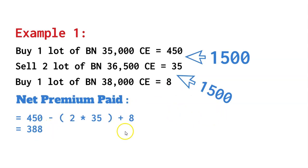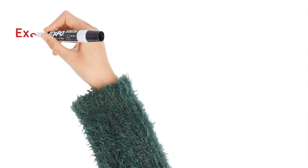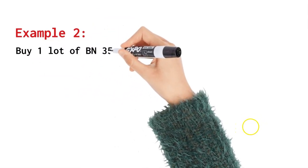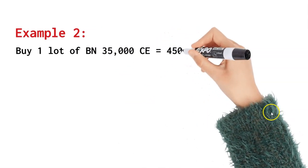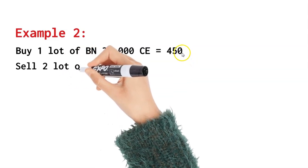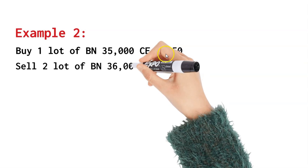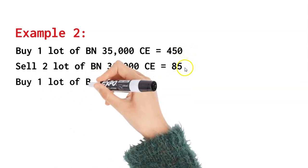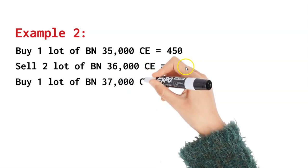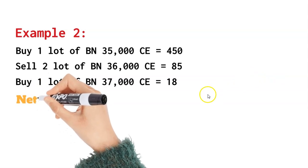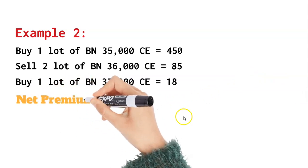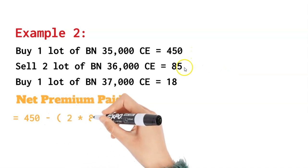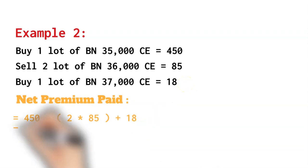In the next example the cost is reduced from 450 to just 388. Now we'll look at a more defensive example. The first example used 1,500 points away — three times the premium paid. In this second example, I'm choosing an OTM strike which is 1,000 points away — only two times the premium of 450. Instead of 900 points I'm going 1,000 points away. As a seller you get two lots at 85 points, so the net premium will be much lesser than the 388 in example one.